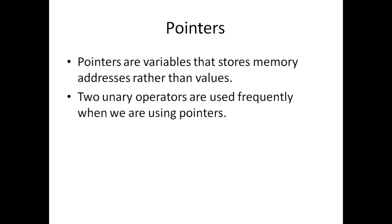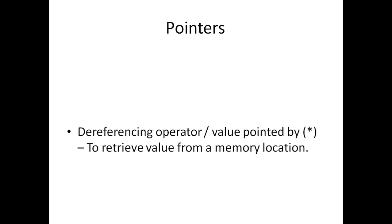If we define a variable, there are mainly two unary operators to know. Unary operators are those operators which have just one operand, just like b++ or count++. There are two unary operators we frequently use with pointers. One is the dereferencing operator, also called 'value pointed by', normally represented as an asterisk or star. It is used to retrieve a value from a memory location.